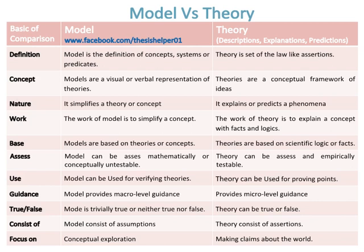A model provides macro-level guidance. Whereas, theory provides micro-level guidance. A model is trivially true or neither true nor false. Whereas, a theory can be true or false.